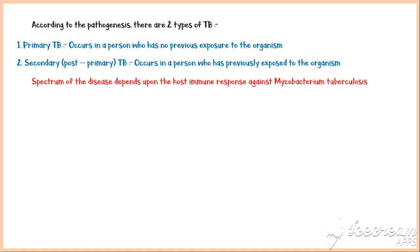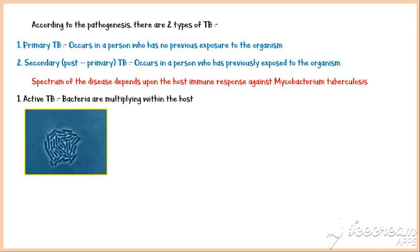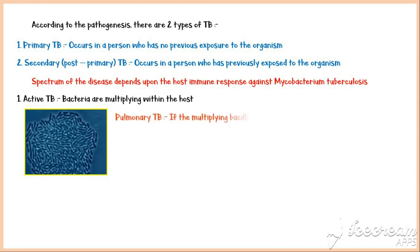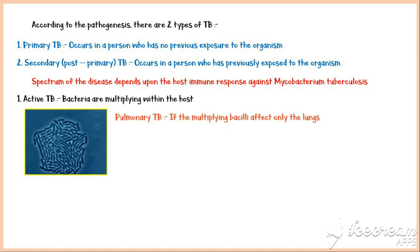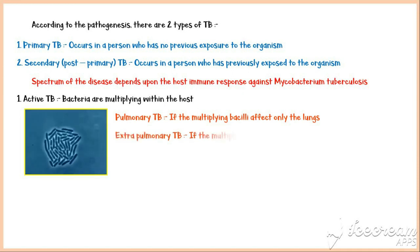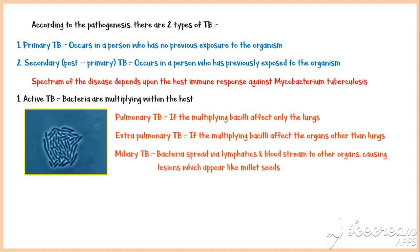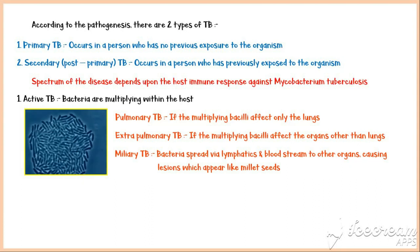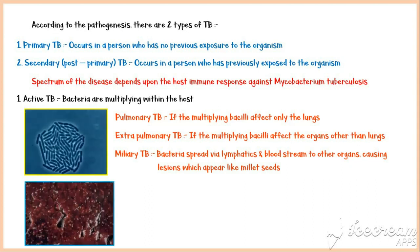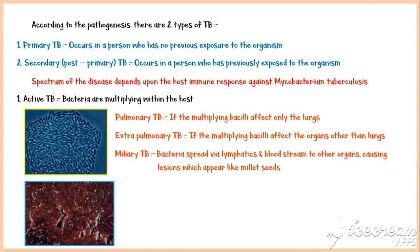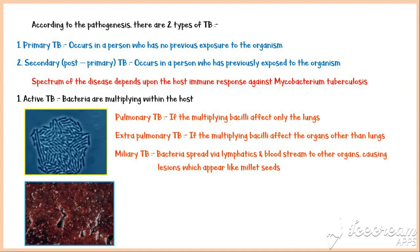The spectrum of the disease depends upon the host immune response against Mycobacterium tuberculosis. In active tuberculosis, bacteria are multiplying within the host. If the multiplying bacteria affect only the lungs, it is called pulmonary tuberculosis. If they affect organs other than the lungs, it is known as extra-pulmonary tuberculosis. The other type of active TB is miliary tuberculosis, where bacteria spread via lymphatics and bloodstream to other organs, causing lesions which appear like millet seeds, as you can see in this picture. It is important to note that miliary TB is different from extra-pulmonary tuberculosis, and its infectivity is extremely high with a high bacterial load. It can be fatal if left untreated.